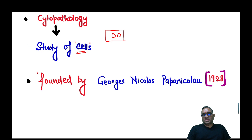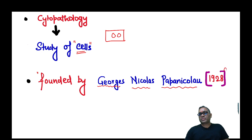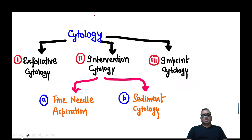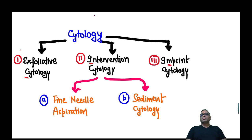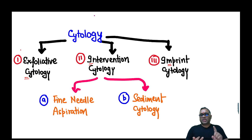This cytopathology branch was founded by Georges Nicholas Papanicolaou in 1928. He discovered this cytology branch, which has three branches: one is called exfoliative cytology, second is interventional cytology, and third is imprint cytology. Interventional cytology has two sub-branches — fine needle aspiration cytology (FNAC) and sediment cytology.